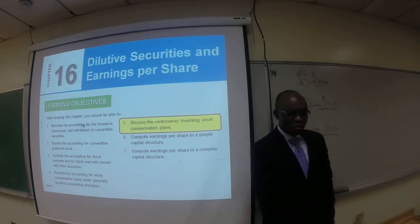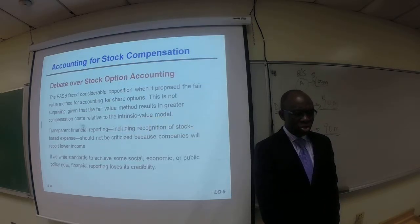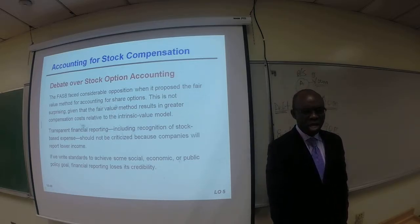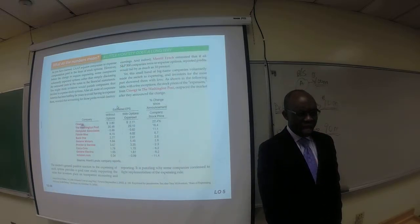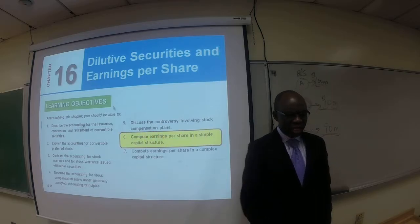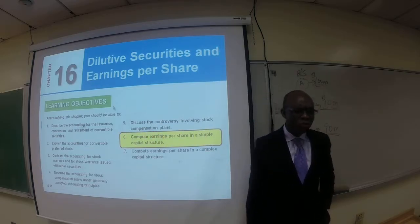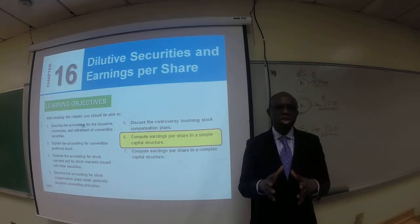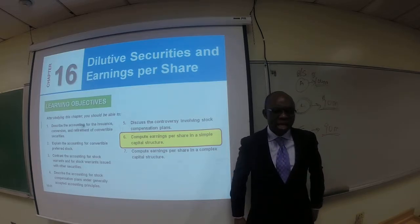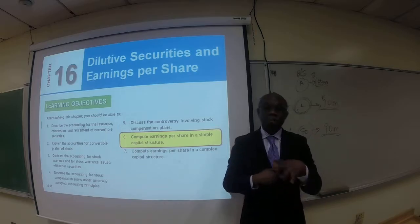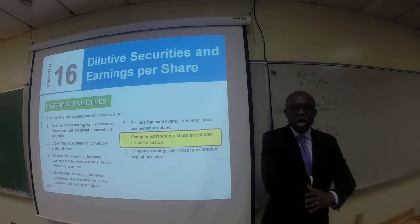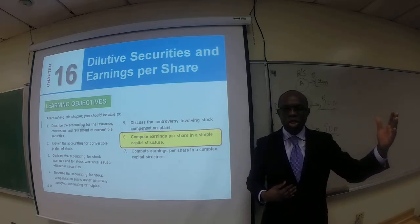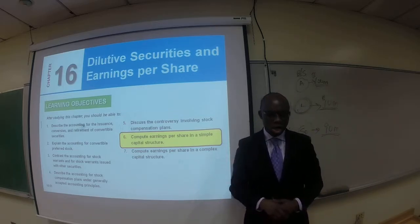Now, regarding the controversy involving stock compensation plans, I encourage you to read about the debate over stock option accounting. Now let's take a look at the second part of Chapter 16, which is earnings per share. This is the most interesting of the two issues in this chapter. The first issue is dilutive securities; the second issue is earnings per share.